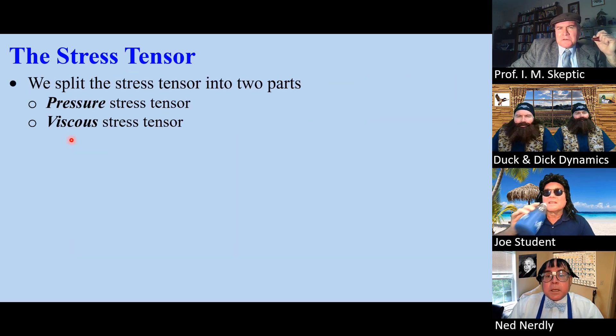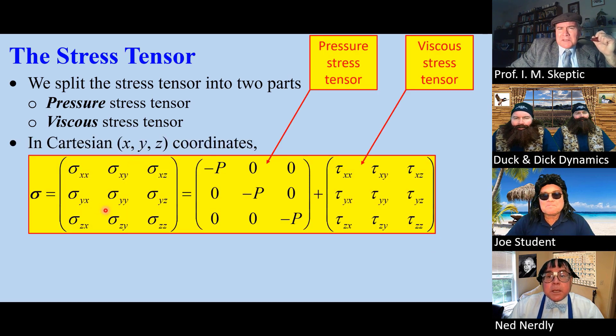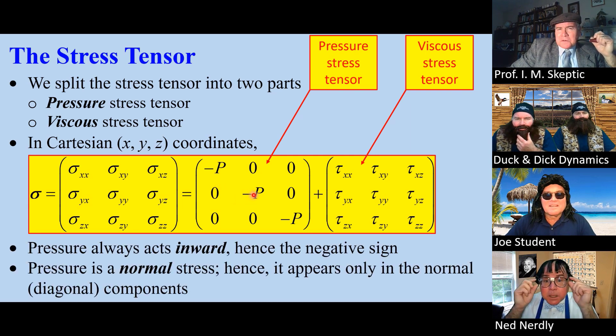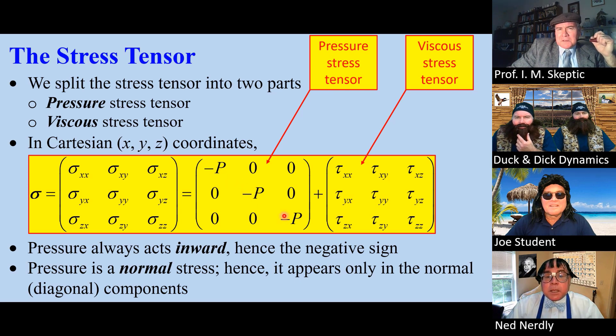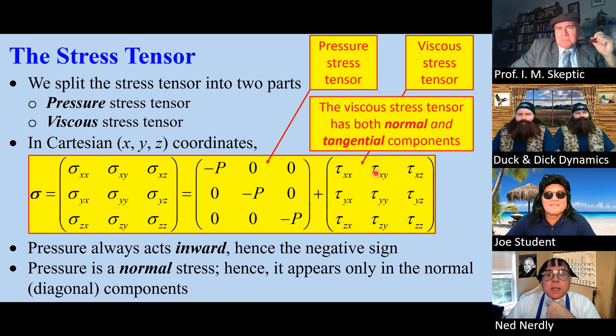We typically split the stress tensor into two parts, pressure and viscous. In our Cartesian coordinate system, sigma has these nine components. We have the pressure part and the viscous part. Pressure always acts inward, hence these negative signs. Pressure is a normal stress. That's why pressure appears only in the diagonals. But the viscous stress tensor has both normal and tangential components.